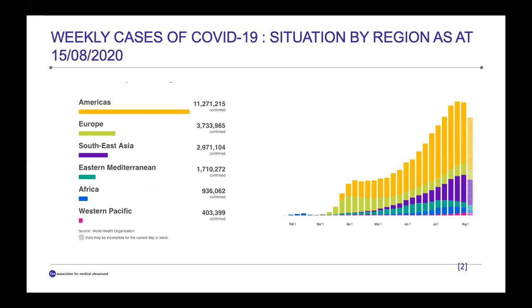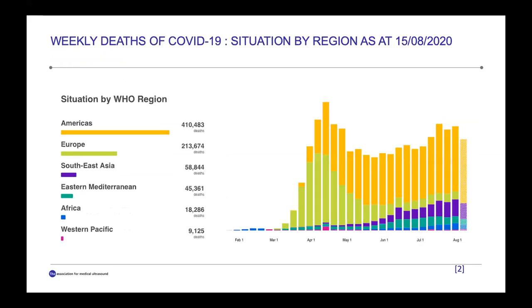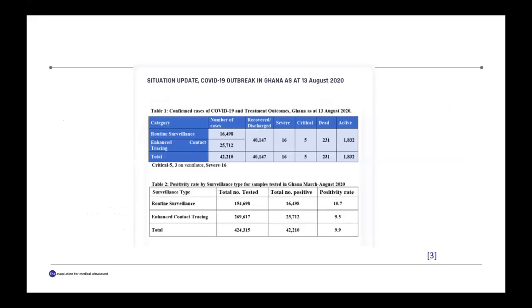Looking at the WHO situation reports on weekly COVID-19 cases by world region: the Americas have the highest number of cases. Africa and Southeast Asia seem not to have too many cases compared to other regions. For weekly deaths, the picture is about the same — Africa, Southeast Asia, and the West Pacific don't have too many deaths, relatively.